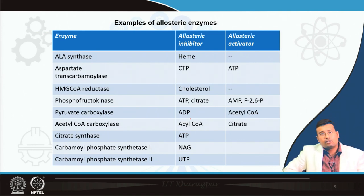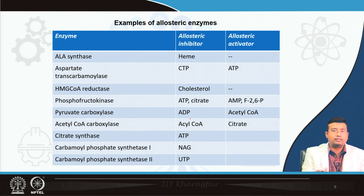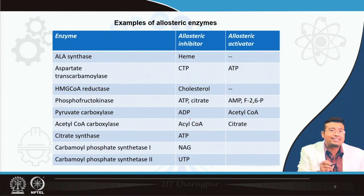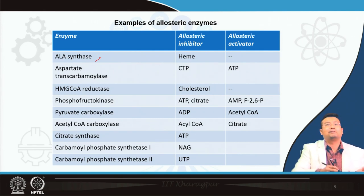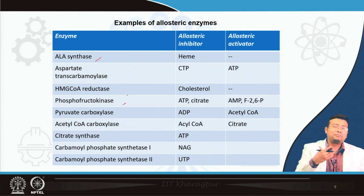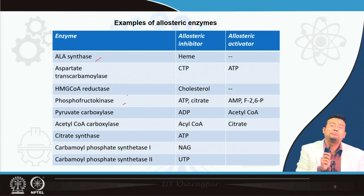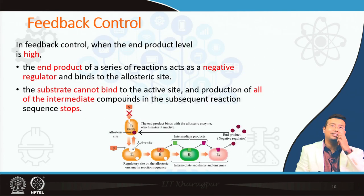These are a few examples of allosteric enzymes — you can pause the slide and note them, but do not try to memorize them at this point, because these will be repeated in subsequent classes. For example: ALA synthase in heme metabolism, aspartate transcarbamoylase in pyrimidine synthesis, HMG-CoA reductase in cholesterol metabolism, phosphofructokinase in carbohydrate metabolism. It is best that you prepare your own notes so you can easily refer to this as a handout when needed during the metabolic regulation of various pathways.